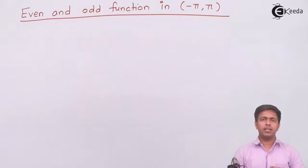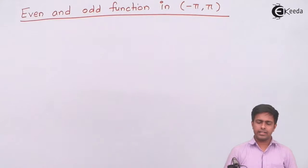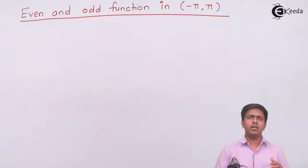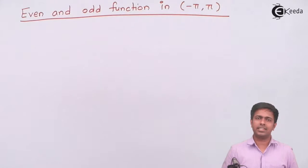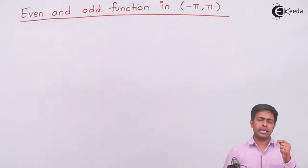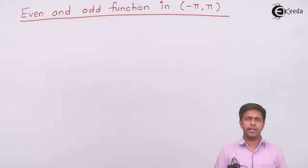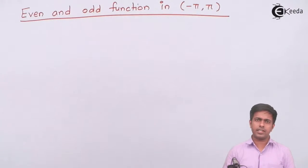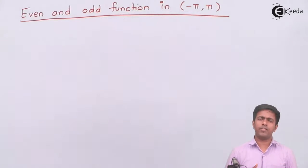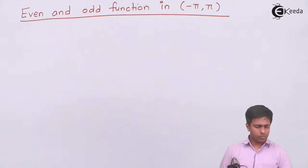We are going to see a new concept in Fourier series: even and odd functions in the range negative pi to pi. In previous videos, I covered important results required for Fourier series, including the concept of even and odd functions. Whenever the range of integration is from negative a to positive a, we can check whether the given function is even or odd, and accordingly the formulae for the Fourier coefficients a₀, aₙ, and bₙ change.